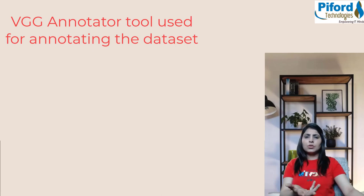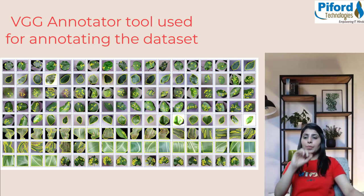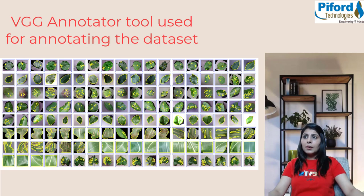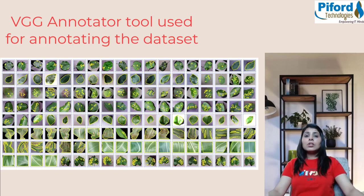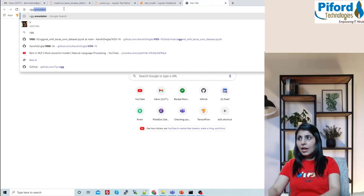The question is how to annotate your data. You can use the VGG Annotator tool or any other tool — I'm working with the VGG Annotator tool. This image shows how I've marked the defected areas of plant leaves using yellow markings in VGG Annotator. If you don't know how to use VGG Annotator, open Google and search for VGG Annotator.